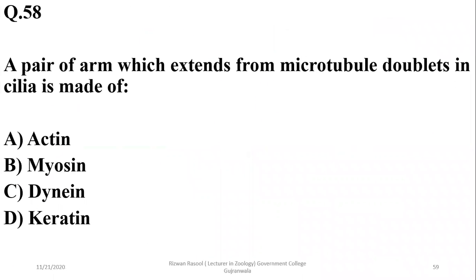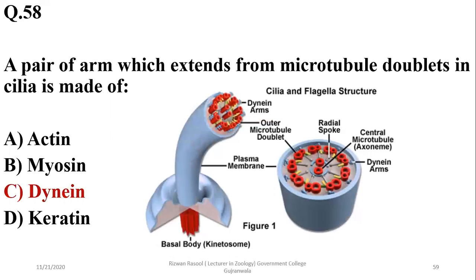A pair of arms which extend from microtubule doublets in cilia is made up of a special type of protein known as dynein protein. As you can see, the spikelets are the portions which extend out from the microtubules, and these are dynein proteins.